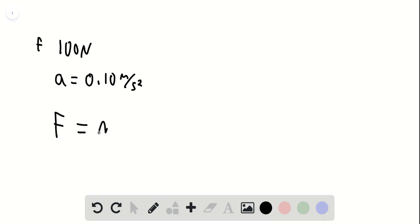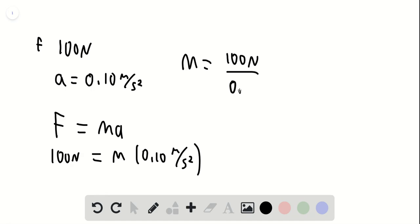So we'll use F equals ma. Our force is 100 newtons, and then that equals the mass times 0.10 meters per second squared. So what we're going to do is we're going to solve for the mass. We're going to have to divide. So the mass will be 100 newtons divided by 0.10 meters per second squared.